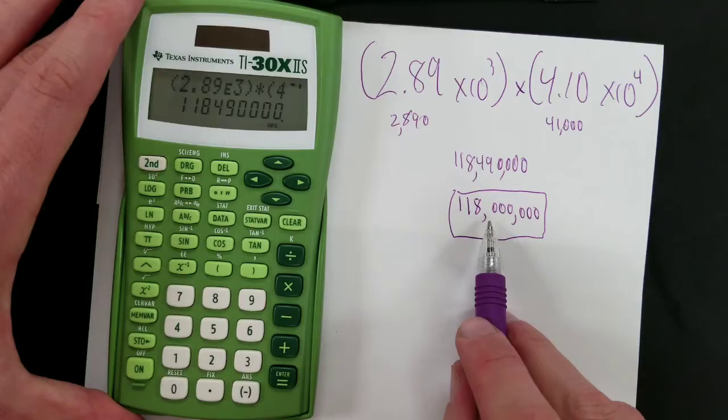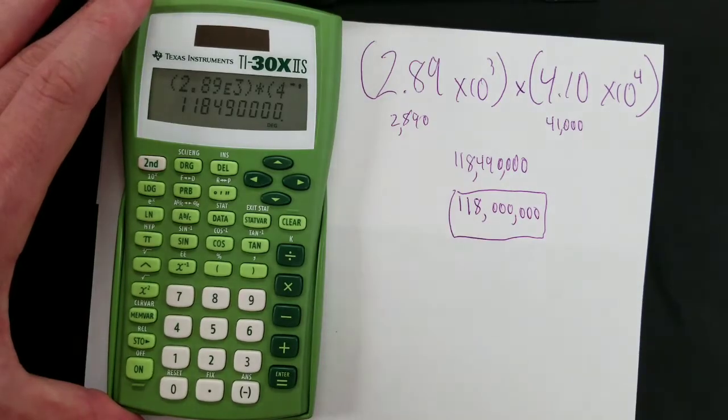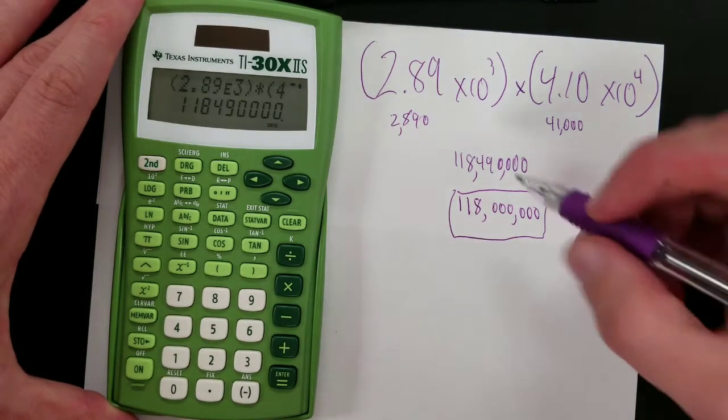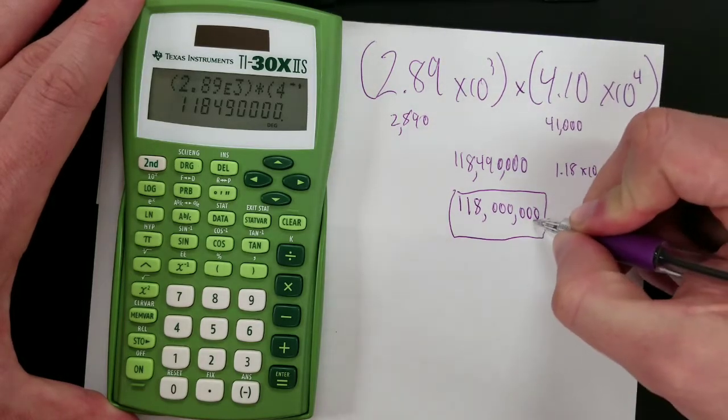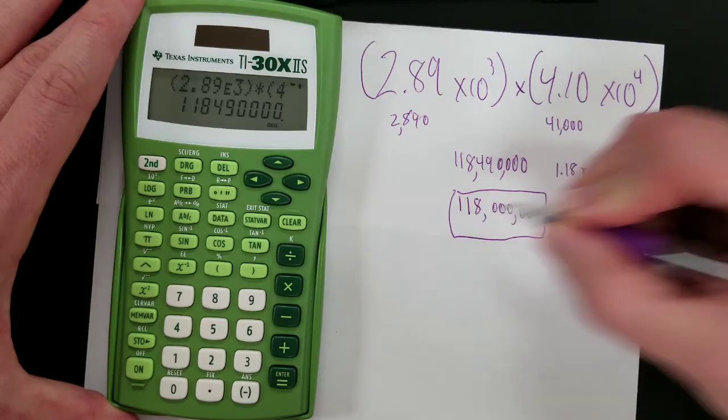But since you're supposed to use scientific notation for very large and very small numbers, let's convert that to scientific notation. Now, you can do this manually. Let's see. 1.18 times 10 to the, let's see, 1, 2, 3, 4, 5, 6, 7, 8.